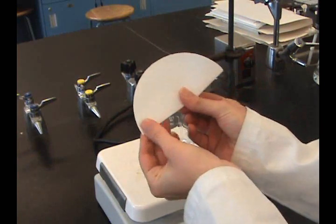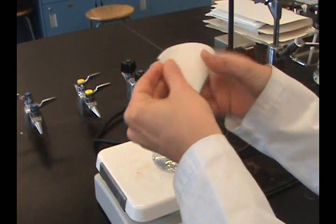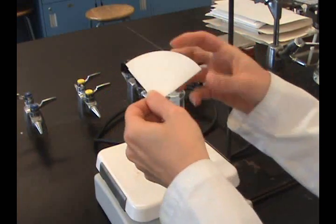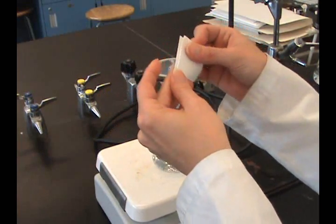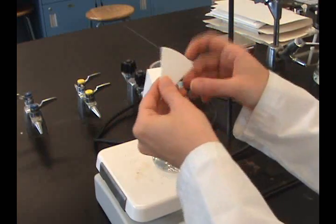Fluting is done by folding the filter paper in quarters, as in regular gravity filtration, but folding each quarter and then each eighth to make a fan.